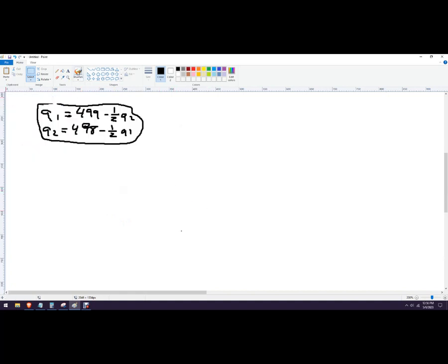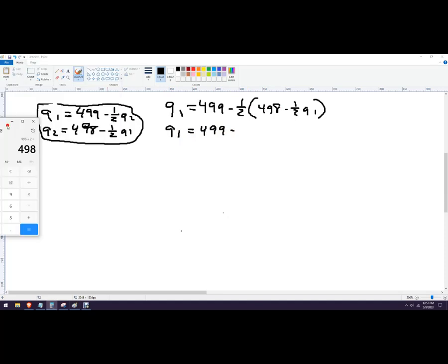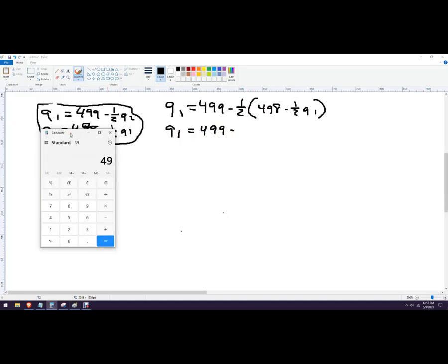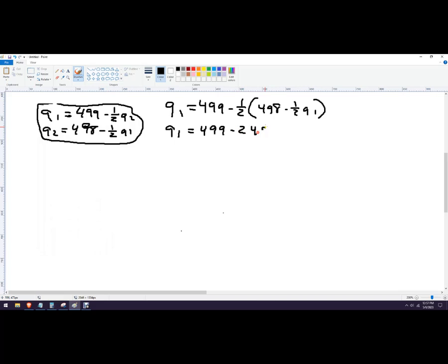So I'm just going to plug one into the other. However you feel would be better. I like firm one first. Remember, it's got to be a little bit bigger. So it's Q1 is 499 minus 1 half, and then we're going to plug in this function into Q2. So it's 498 minus 1 half Q1.